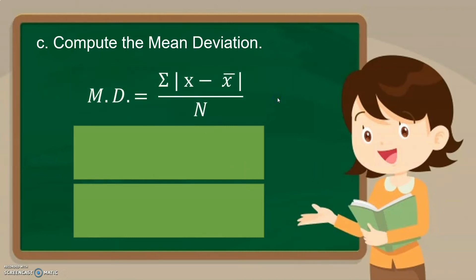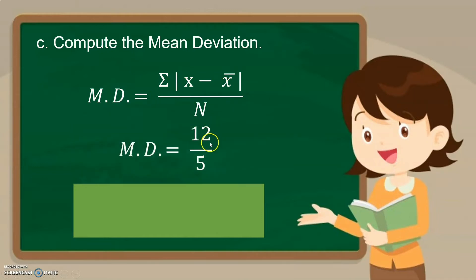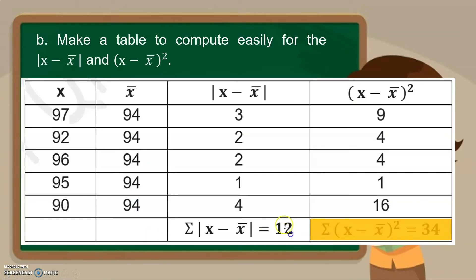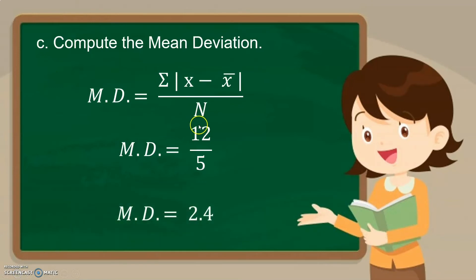We can now compute for the mean deviation. MD equals summation of the absolute value of x minus mean, divided by n. We have 12 divided by 5, which gives us 2.4. So our MD is 2.4.